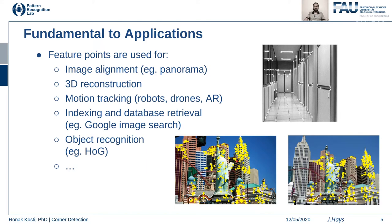Applications of feature point detection include image alignment — for example, panorama stitching is a direct application, because successive images change slightly and you want to match many common features to align them. In panorama stitching, your feature point detector should also be robust to photometric transformations like illumination changes so that you are able to stitch images well.